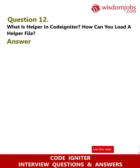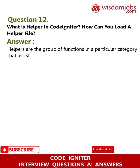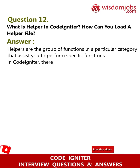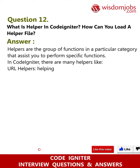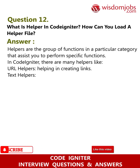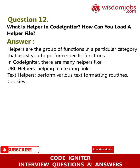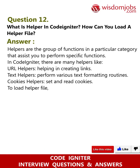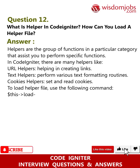Question 12: What is a helper in CodeIgniter, and how can you load a helper file? Answer: Helpers are groups of functions in a particular category that assist you to perform specific functions. There are many helpers — URL helpers help in creating links, text helpers perform various text formatting routines, and cookie helpers set and read cookies. To load a helper file, use: $this->load->helper('helper_name').